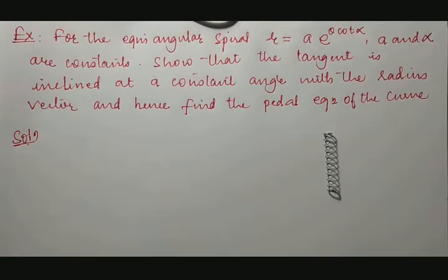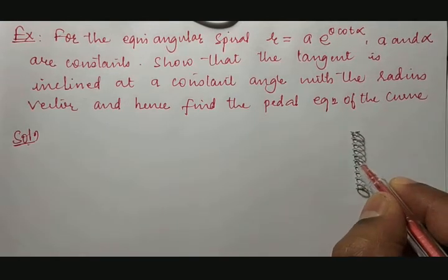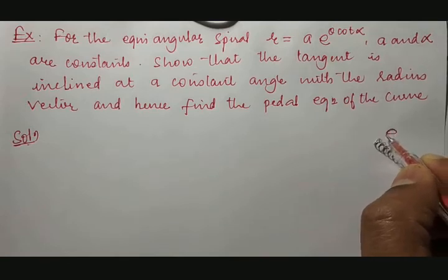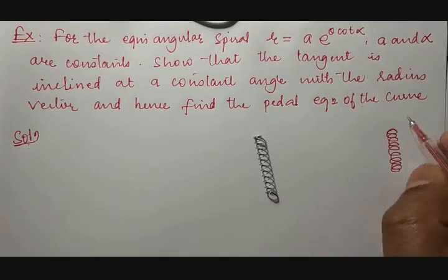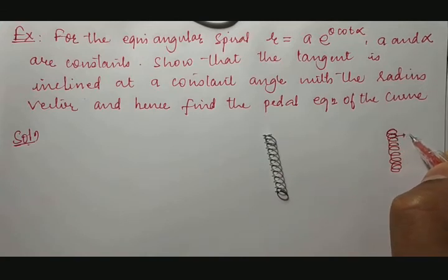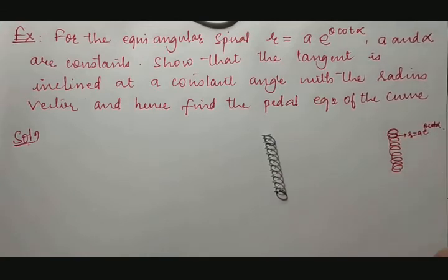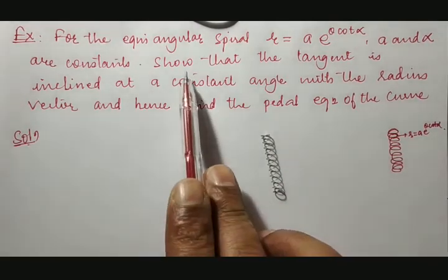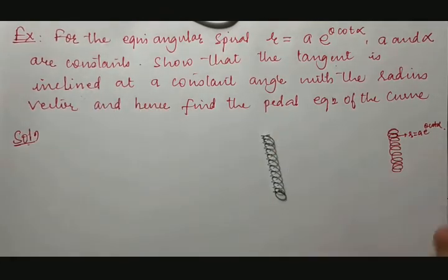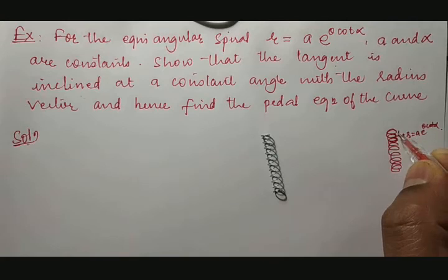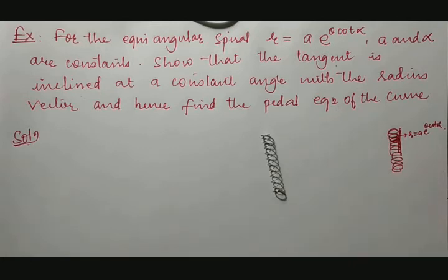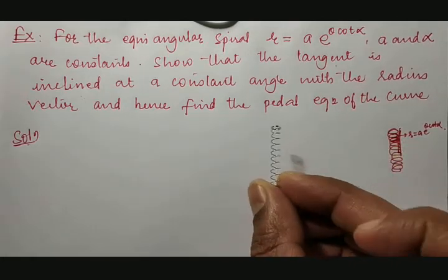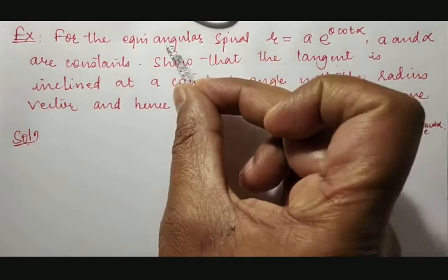If you take this equiangular spring, you can see here the angle is almost the same. It comes something like this. So this equiangular spiral — this curve — represents r is equal to a into e raised to theta into cot alpha, where a and alpha are the constants. Show that the tangent is inclined at a constant angle.